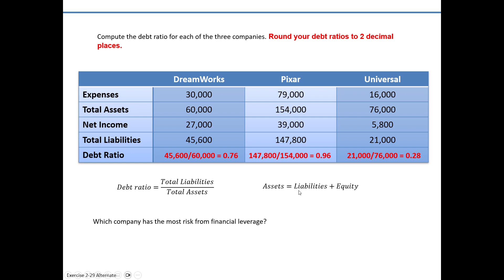Debt is more risky than equity because debt has to be paid back. If an owner invests and buys stock in your company, you don't necessarily have to pay them dividends or buy them out at any time. But if you — as a company or even as a person — borrow money, you have to pay it back. You can be forced into bankruptcy if you don't keep up with interest payments and principal payments. So debt is definitely more risky.